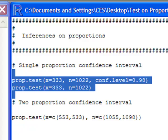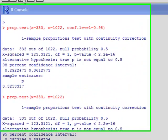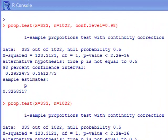Let's run this code and see what happens. Notice we got two outputs. The first one is for a 98% confidence interval, and the second one is for a 95% confidence interval.